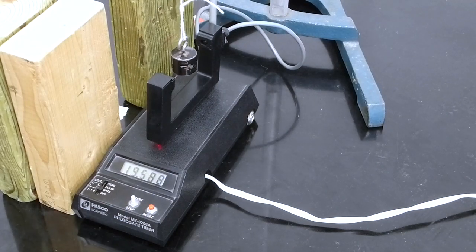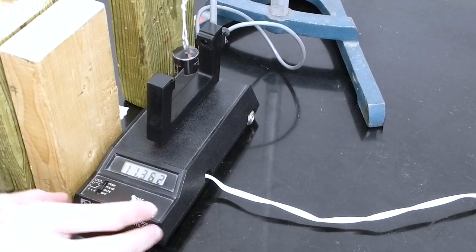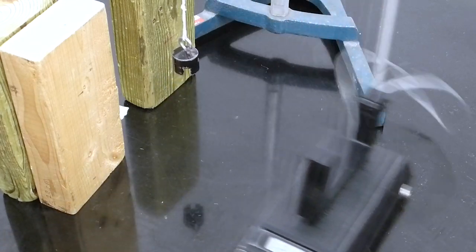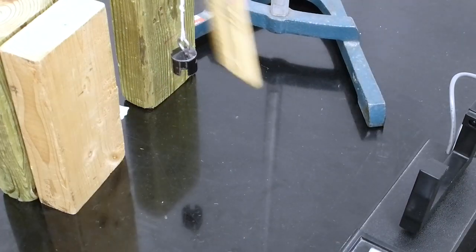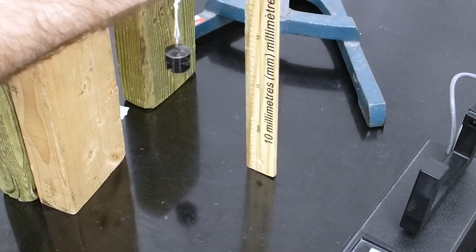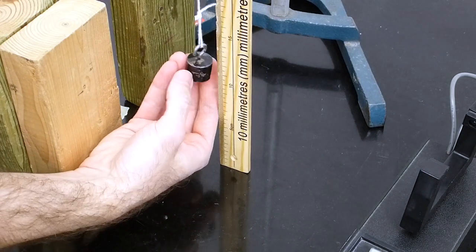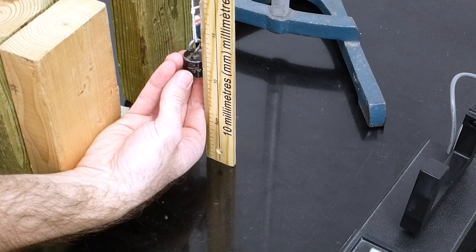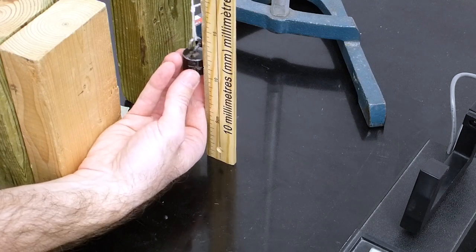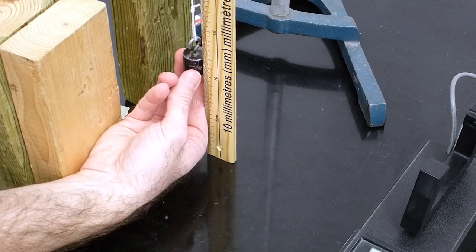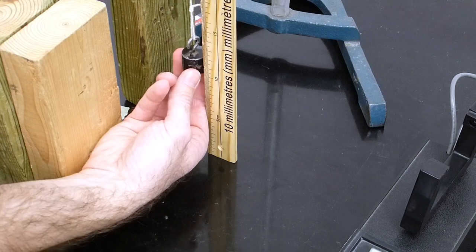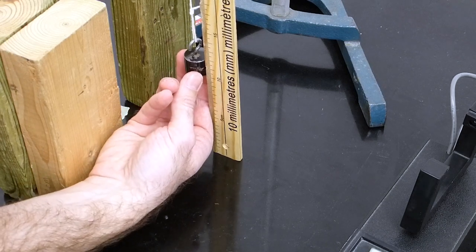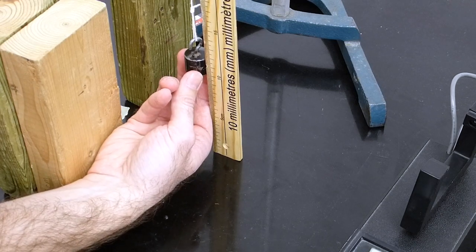Now before we can start with the experiment, we have to measure the lowest height of the pendulum. Try to measure the height of the center of mass. So if your pendulum doesn't have a marking yet, maybe you want to put a marker somewhere where you think the center of mass is. So here I would measure my lowest height at around 11.1 cm.